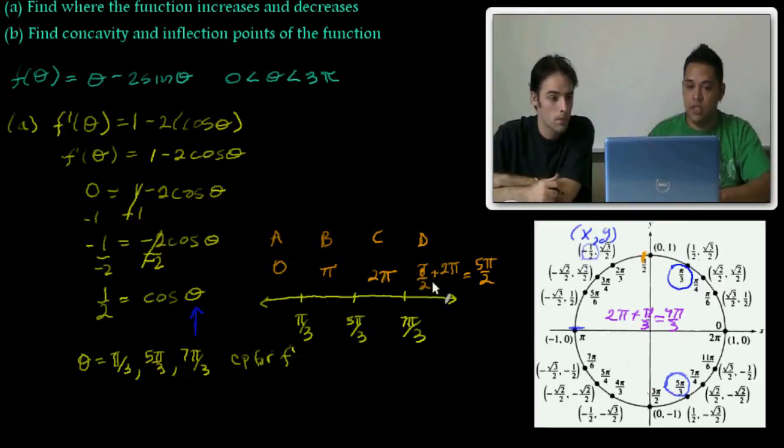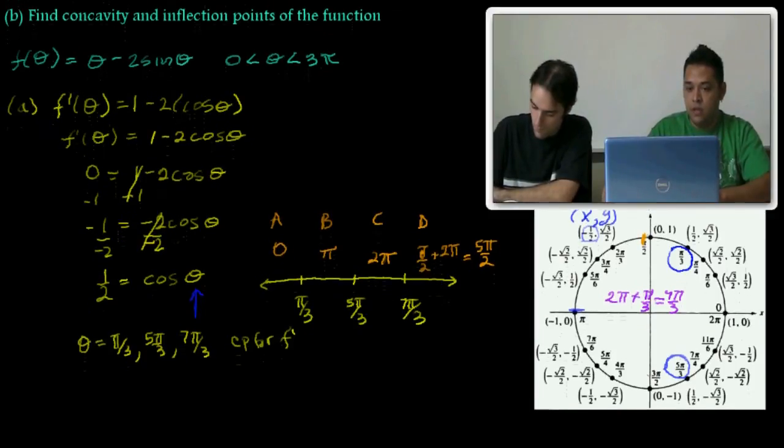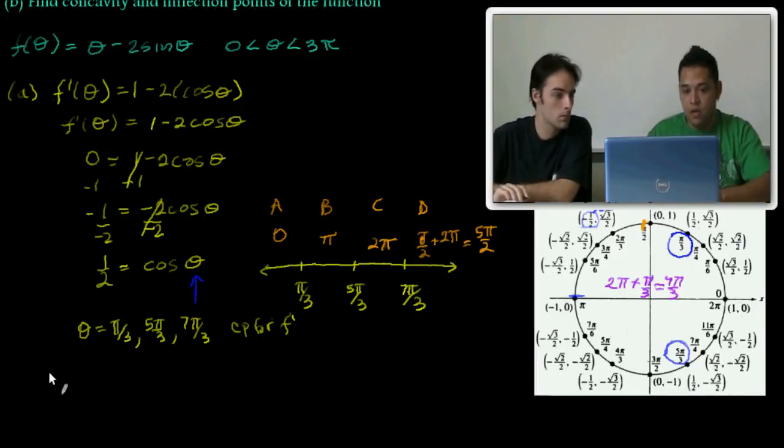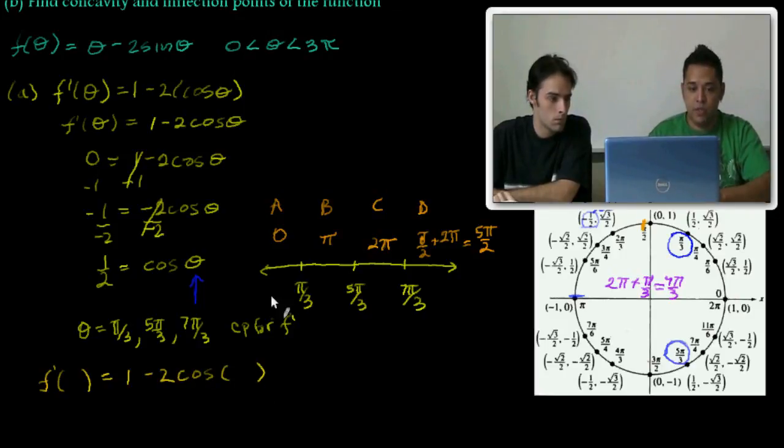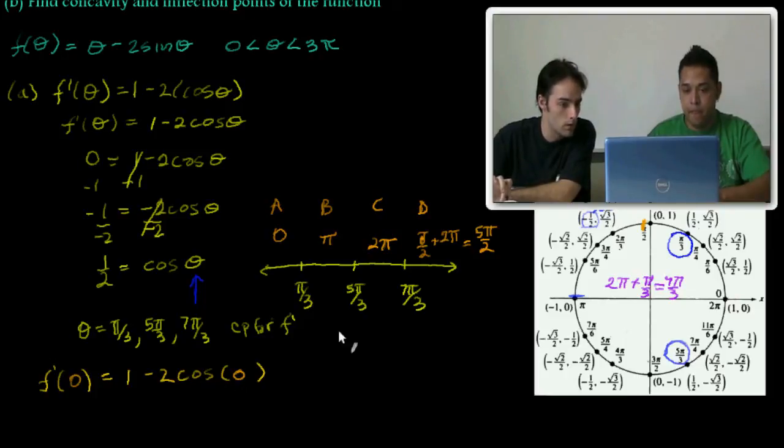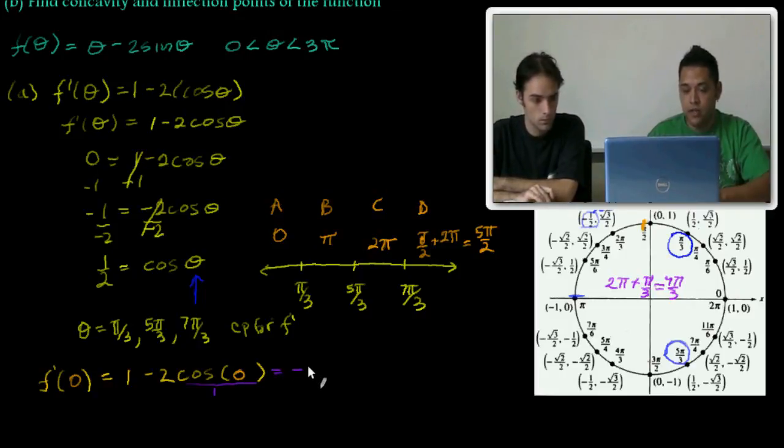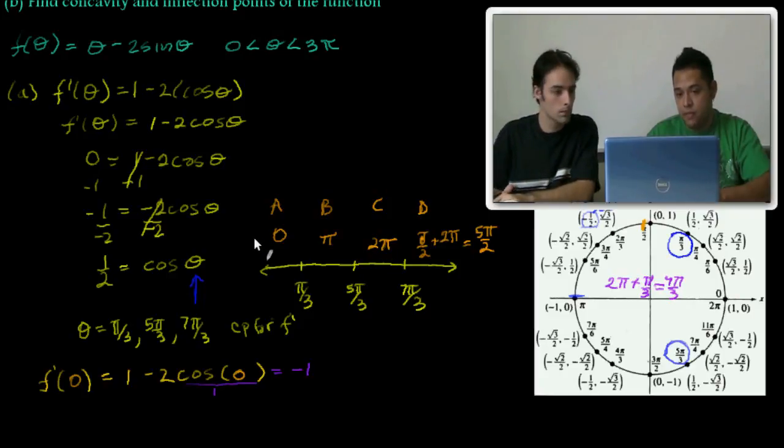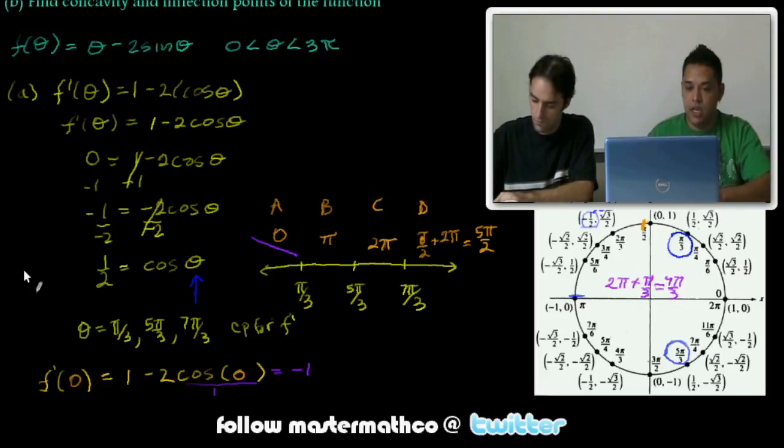We plug these test points into our first derivative. F prime of some number equals 1 minus 2 cosine of that angle. I'm going to test 0 first. Cosine of 0 is 1, so we have 1 minus 2, which is negative 1. That means we would be decreasing here in region A.